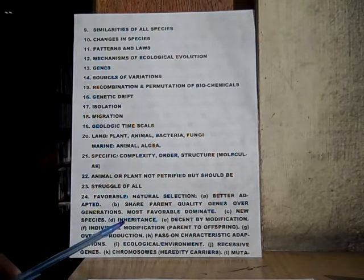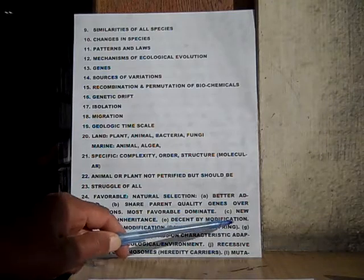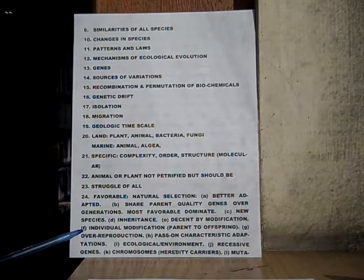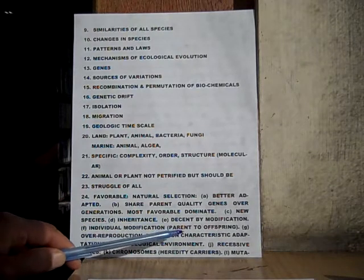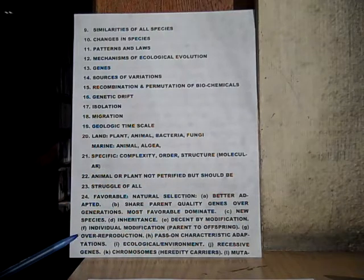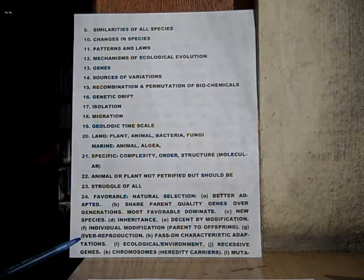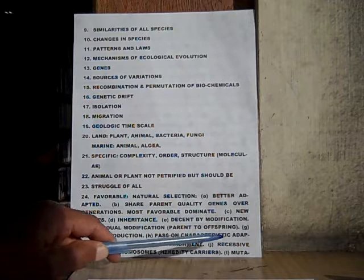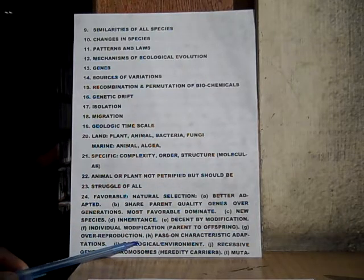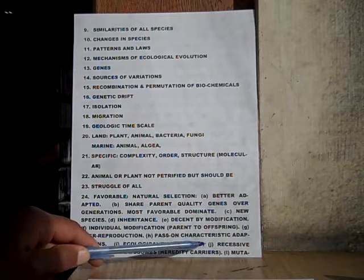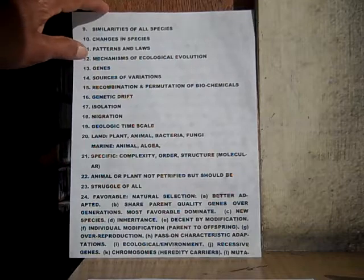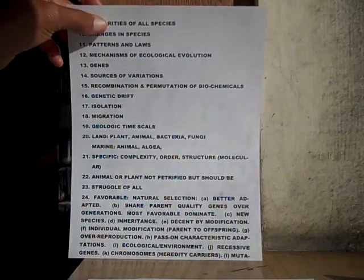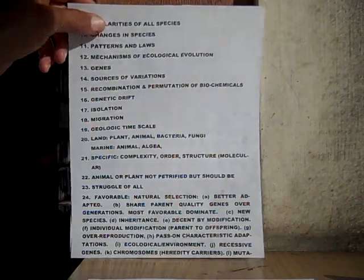D. Inheritance. E. Descent by modification — that means parent to offspring. G. Over reproduction — this sometimes helps. H. Pass on characteristic adaptations. I. Ecological slash environment. J. Recessive genes. K. Chromosomes, which are heredity carriers. L. Mutations.